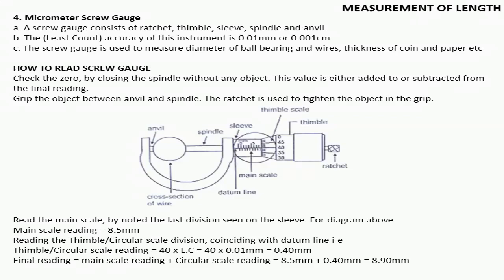Read the main scale by noting the last division seen on the sleeve. From the diagram above, in this diagram, main scale reading is equal to 8.5 millimeter. The above division as you see on main scale shows 0 and 5, these show 1 millimeter of each line. But the below line which we do not write any number on, that is 0.5 millimeter line. So we have seen the lines of 8.5 millimeter on the main scale.